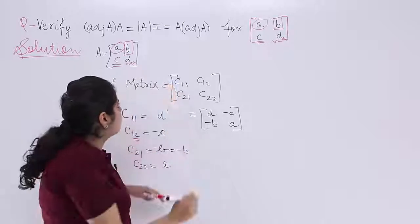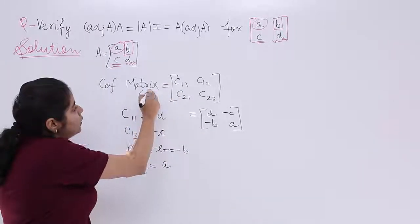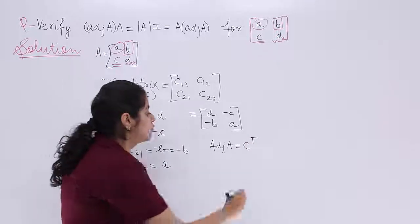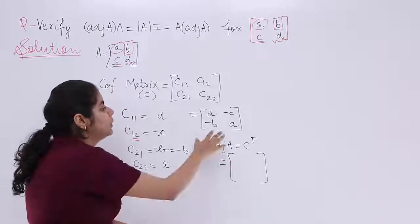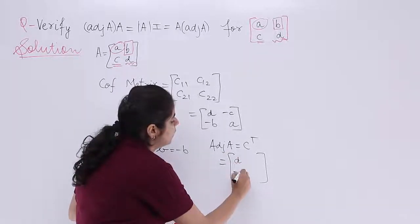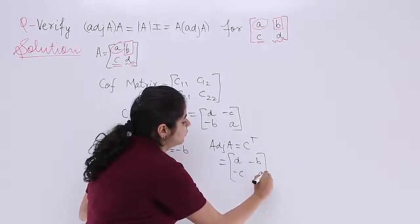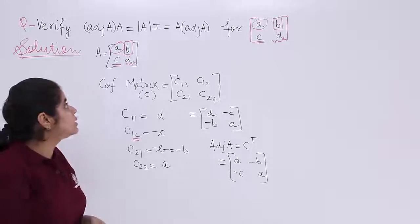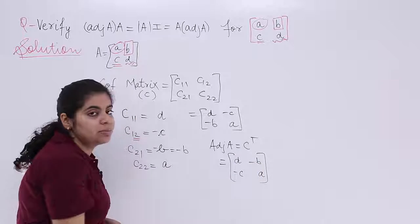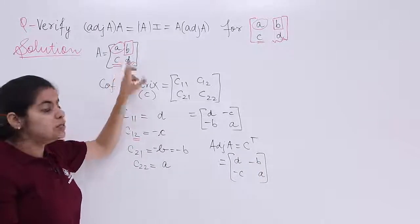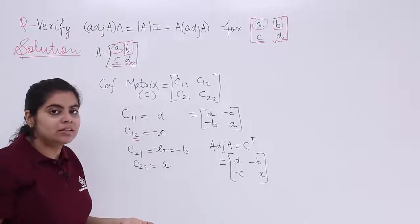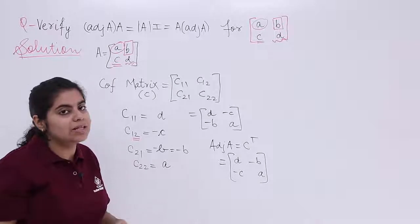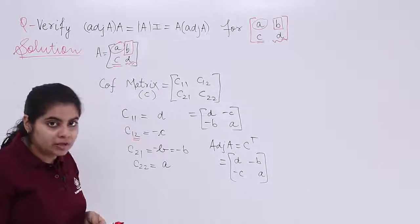The cofactor matrix C has transpose equal to adjoint(A). For a 2×2 matrix, there is a short trick: interchange the diagonal elements a and d, and place negative signs in front of b and c. So adjoint(A) = [[d, −b], [−c, a]]. For subjective questions follow the full cofactor method; for objective questions just use this shortcut.